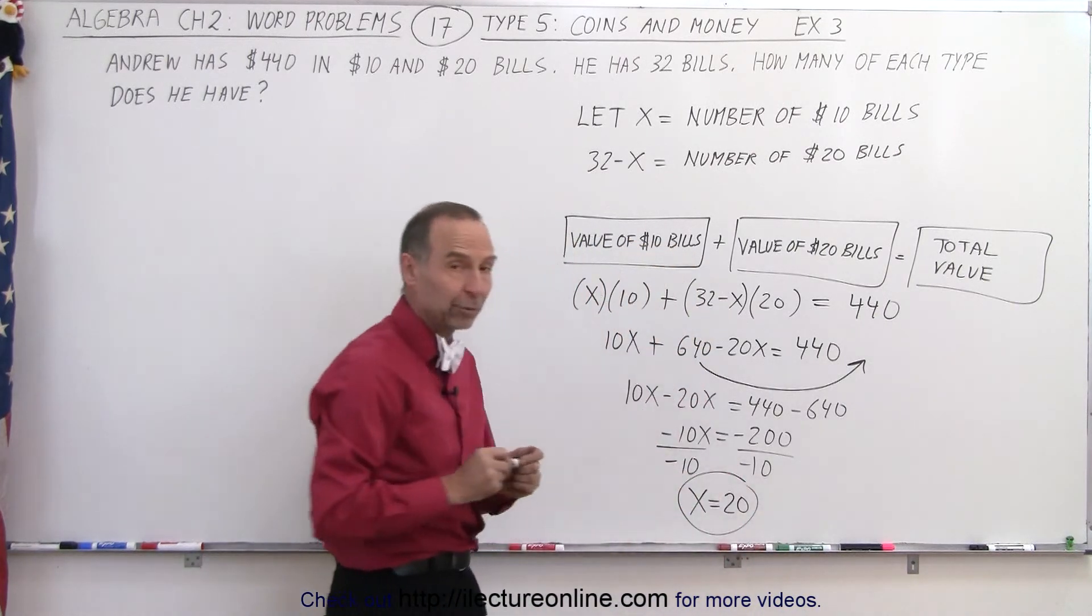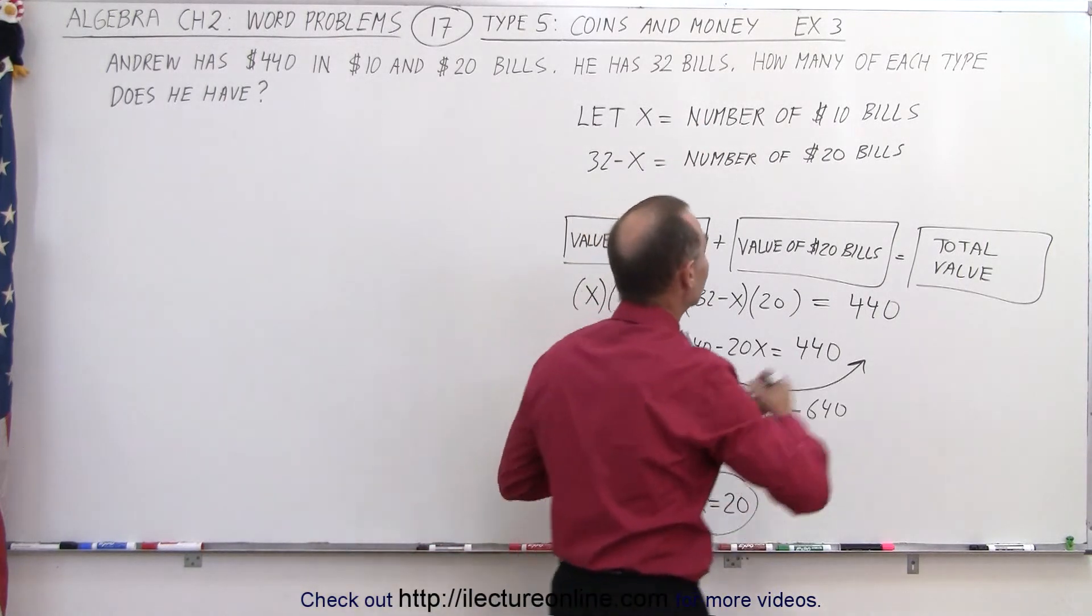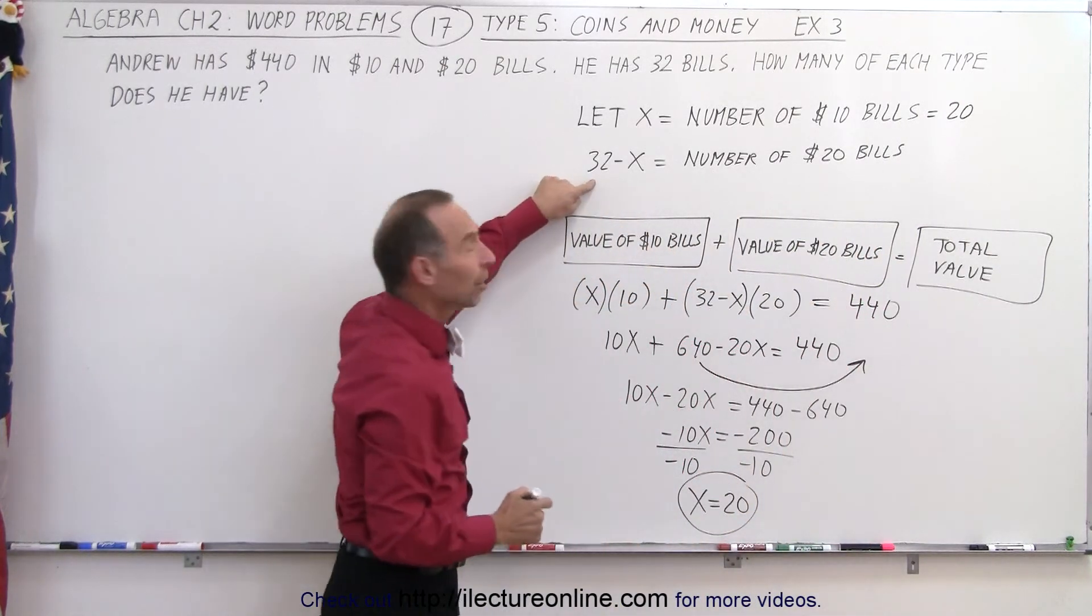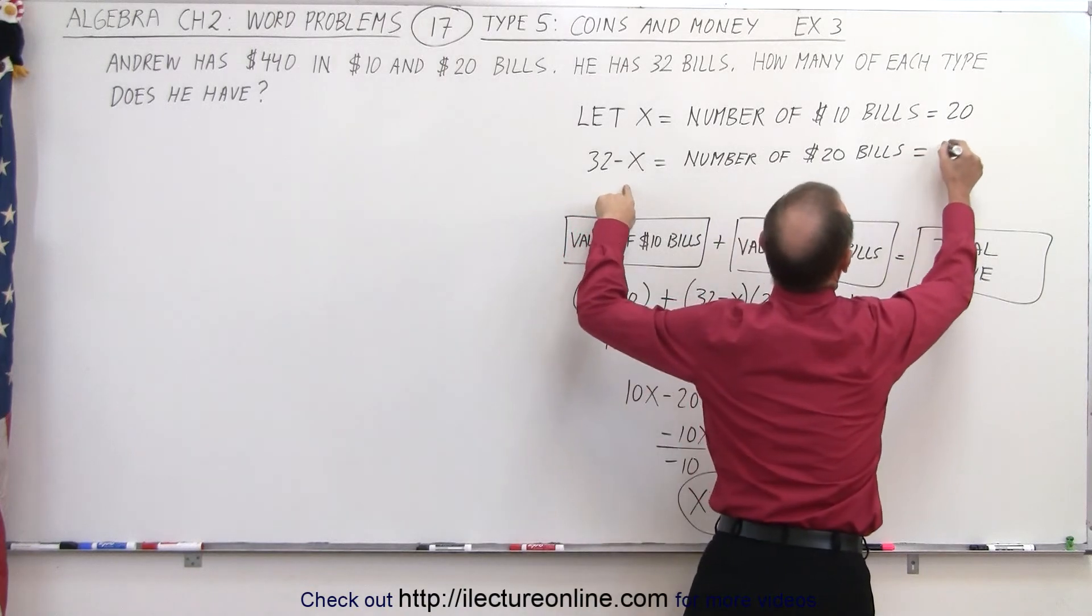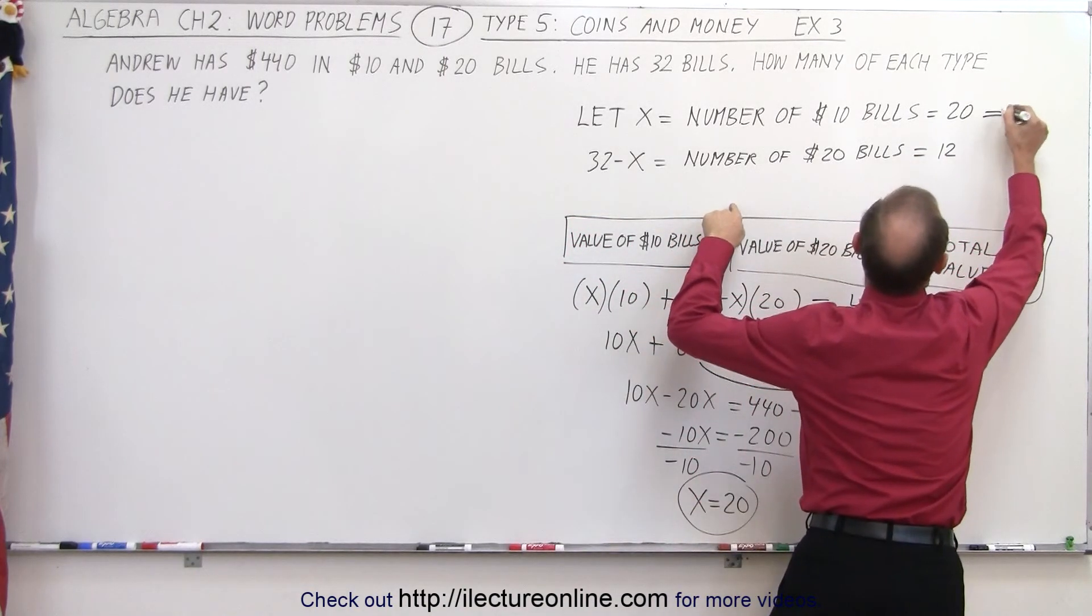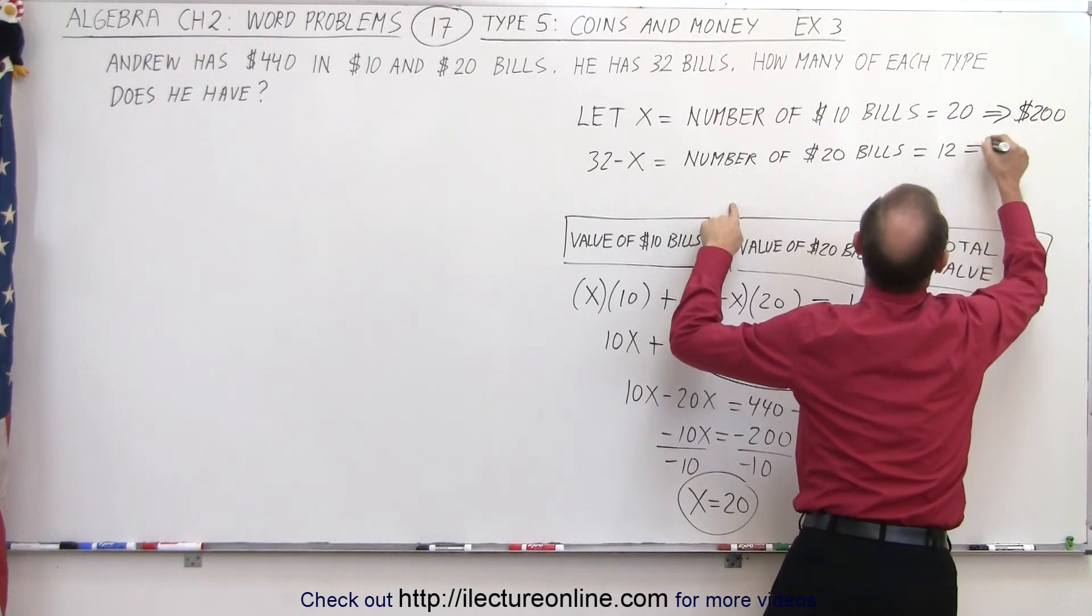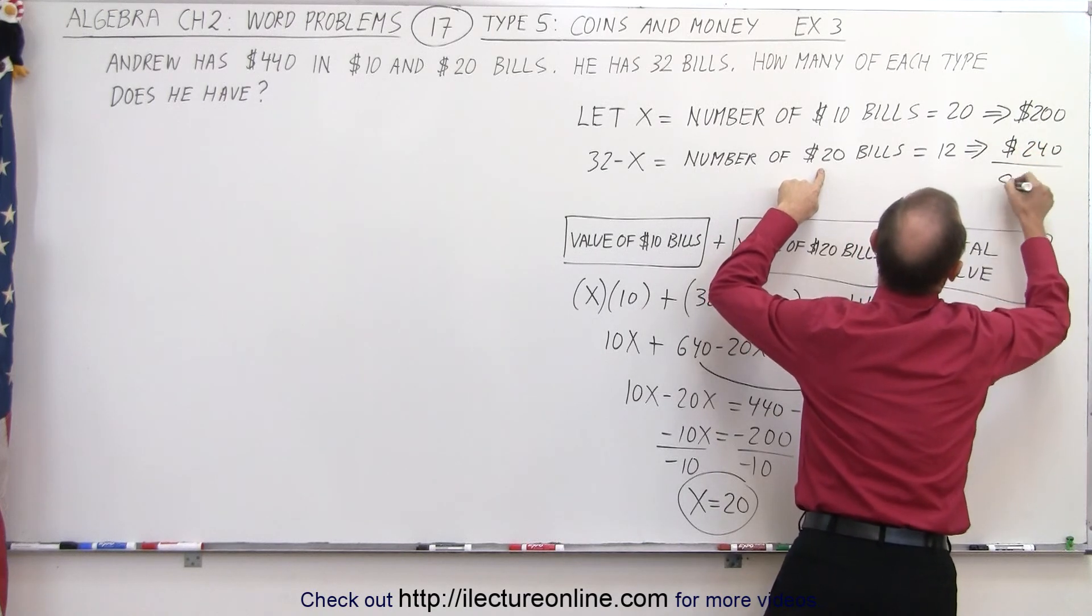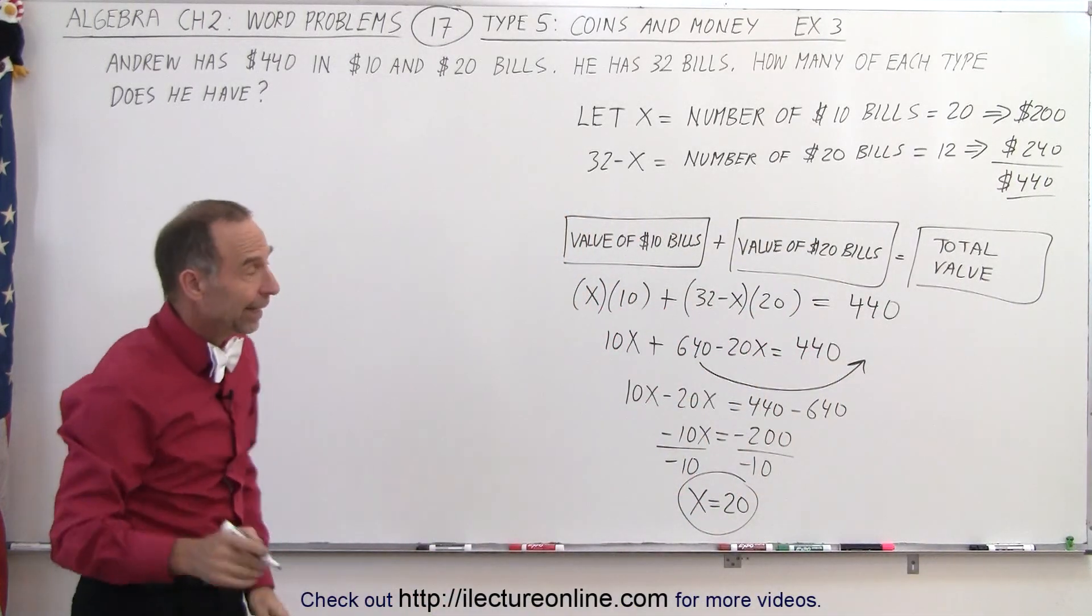Now what does that represent? We go back to our definition. x represented the number of $10 bills, and there were 20 of them, which means that the number of $20 bills would be 32 minus 20, which therefore equals 12. Which means if you have 20 $10 bills, that's a value of $200. If you have 12 $20 bills, that's a value of $240. Together, that's a value of $440, which is the amount we started with. So it looks like it is correct.